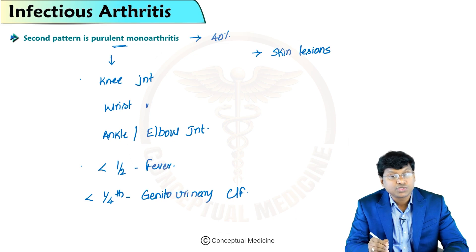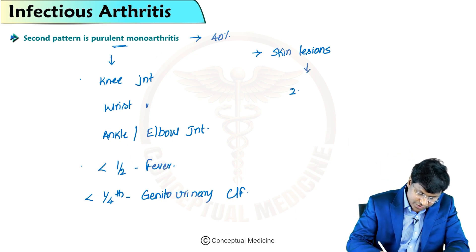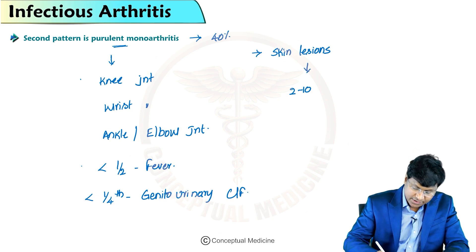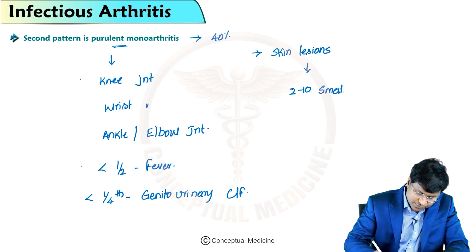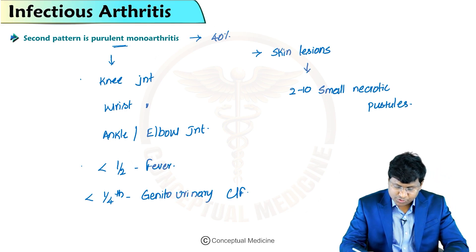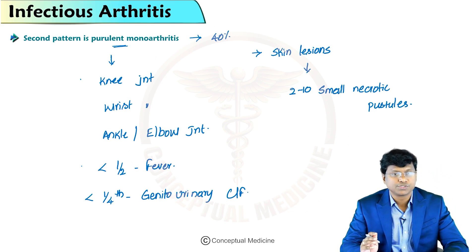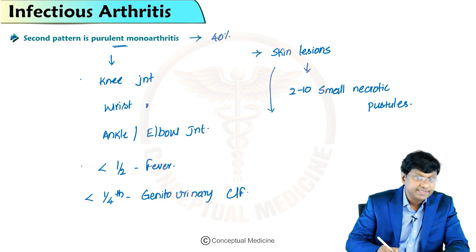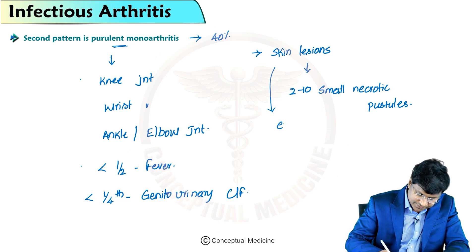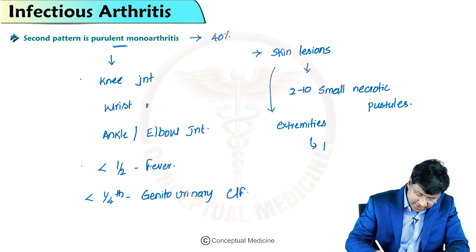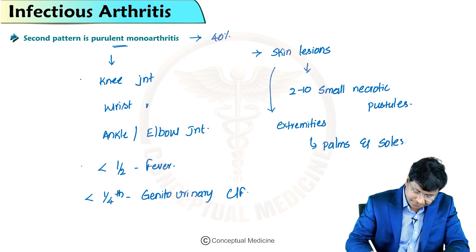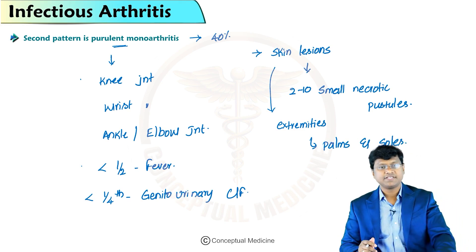These skin lesions usually consist of 2 to 10 small necrotic pustules distributed over the extremities — specifically over the palms and soles.